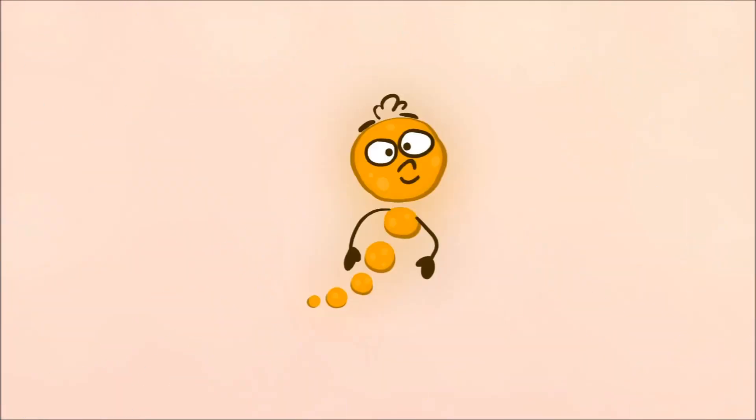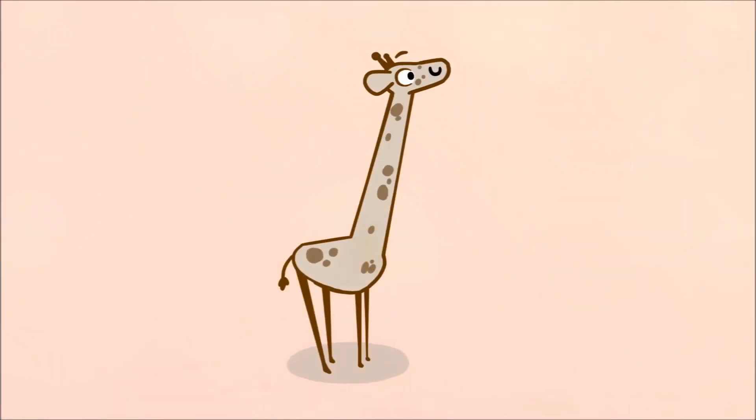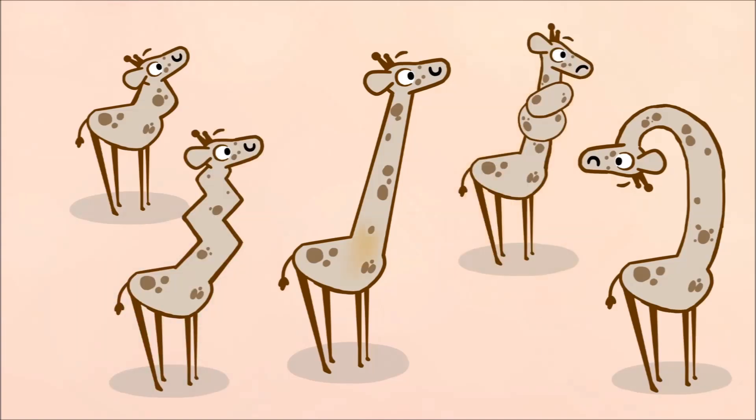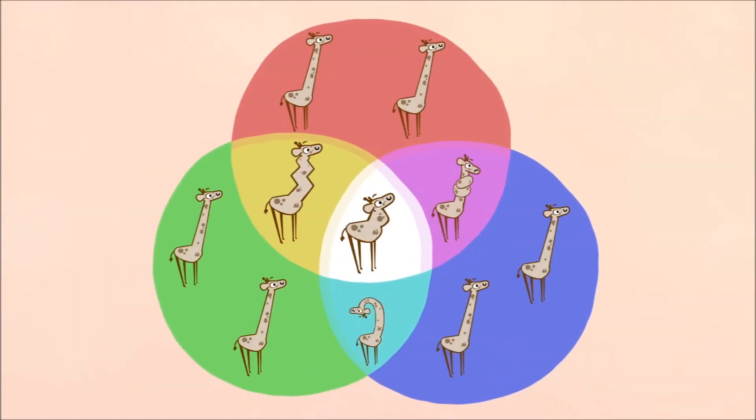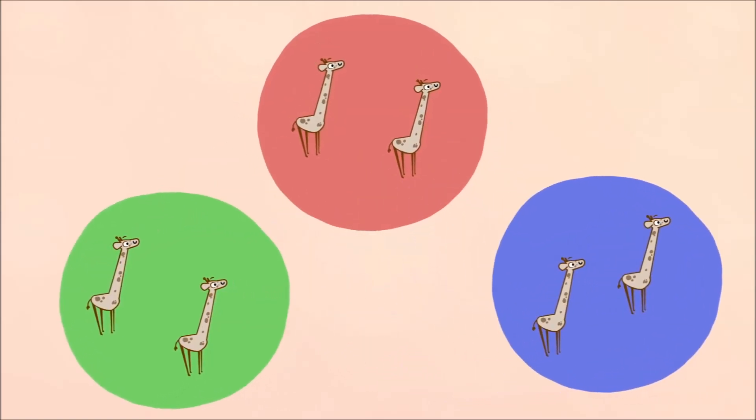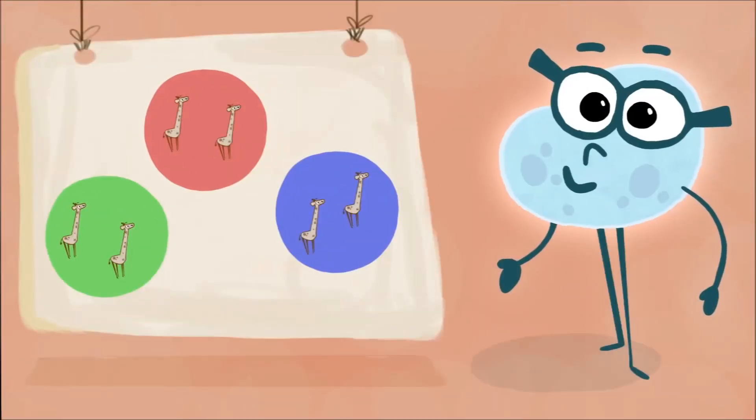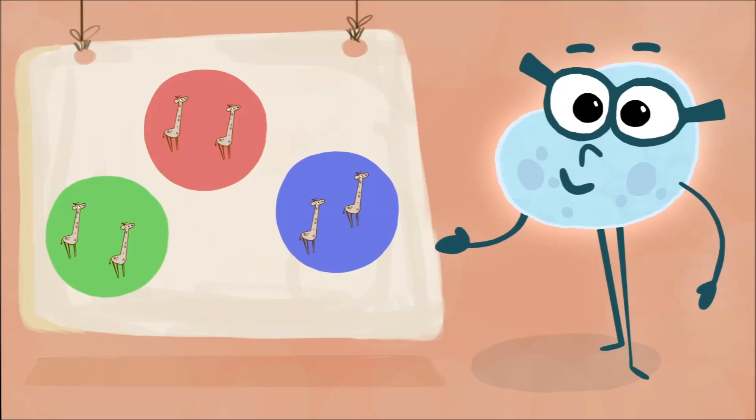All that happens is that random genetic mutations cause the organisms carrying them to behave or develop in different ways. Some of those ways result in more copies of the mutated gene being passed on, and so forth. Nor is there any predetermined plan progressing towards an ideal form.